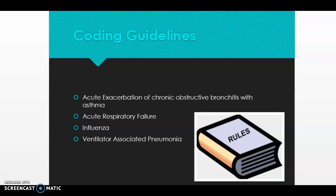The four guidelines cover: how to code acute exacerbation of chronic obstructive bronchitis and asthma, acute respiratory failure, influenza, and ventilator-associated pneumonia. Make sure to review these — I'm a big fan of making flashcards.